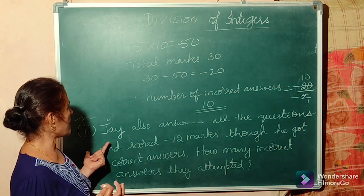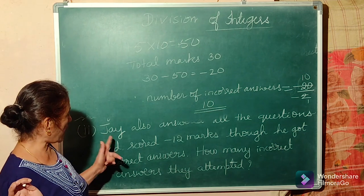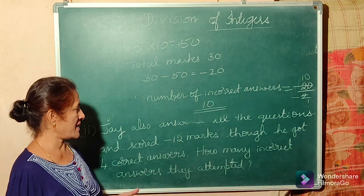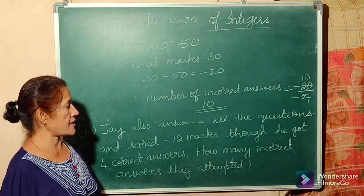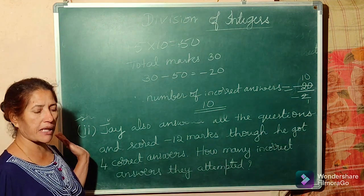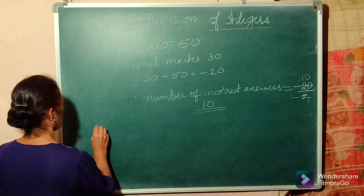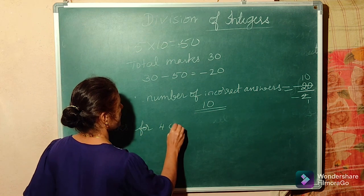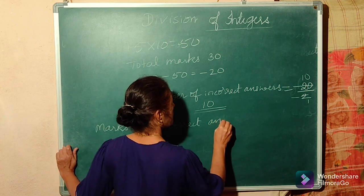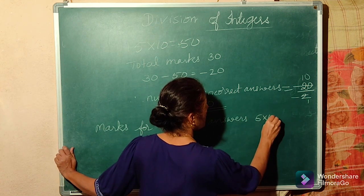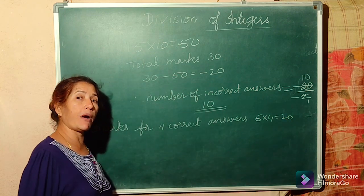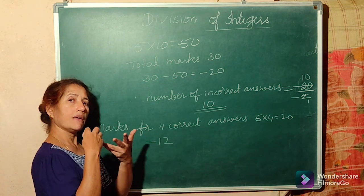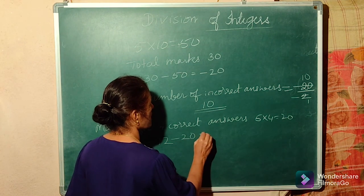Now let us go to Jai. He also answered all the questions and scored minus 12 marks. He got 4 correct answers. For 4 correct answers: 5 into 4 equals 20. He got 20 marks for correct answers.